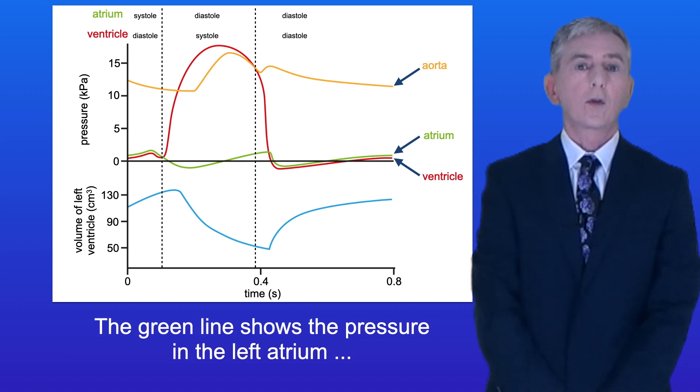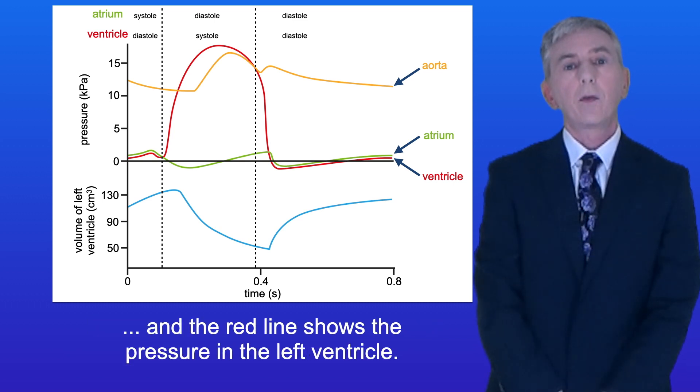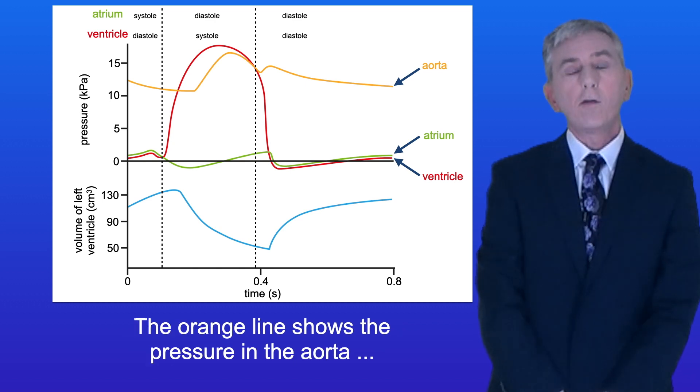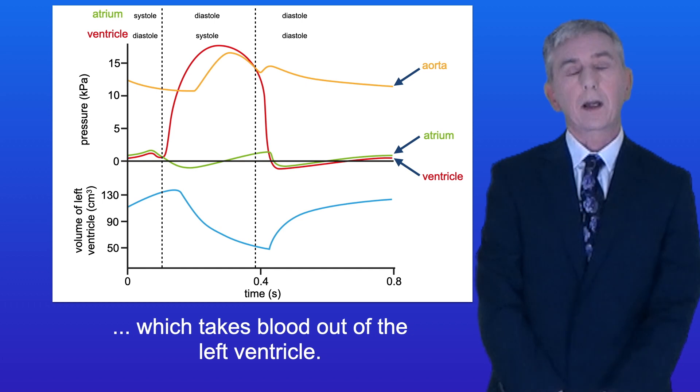Now the green line shows the pressure in the left atrium and the red line shows the pressure in the left ventricle. The orange line shows the pressure in the aorta which takes blood out of the left ventricle.